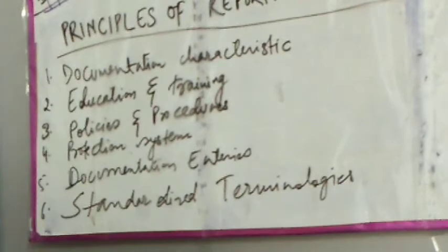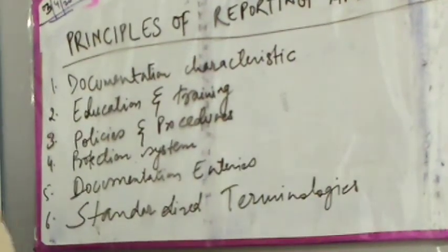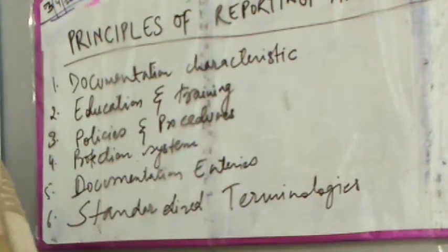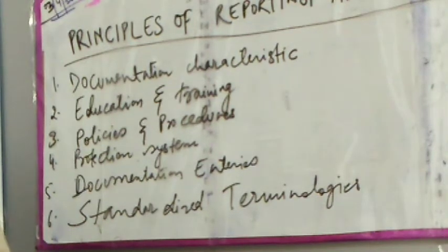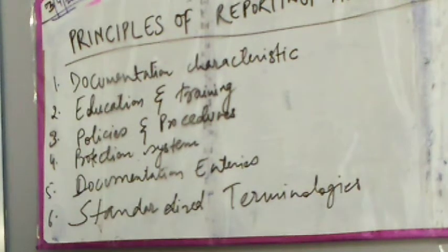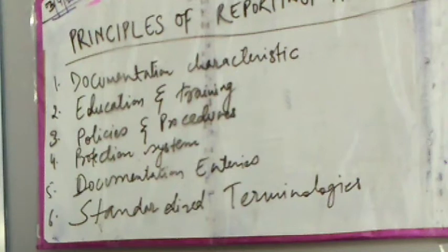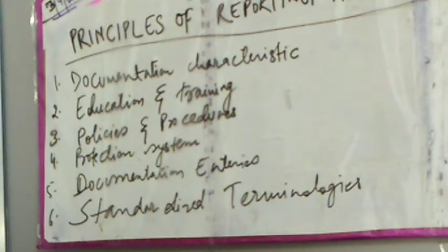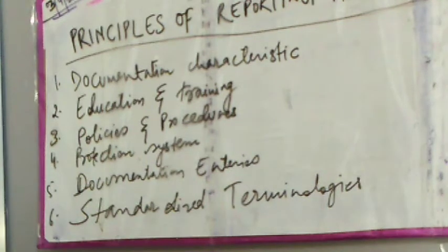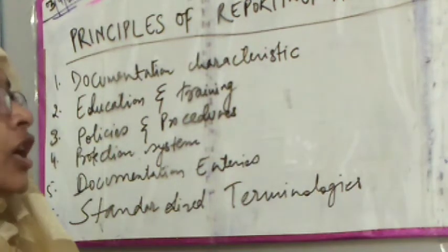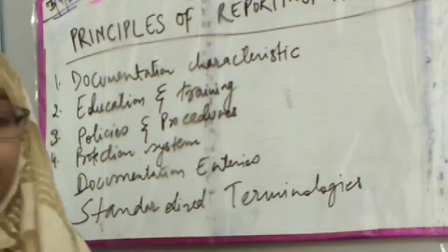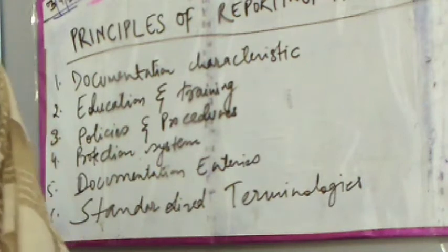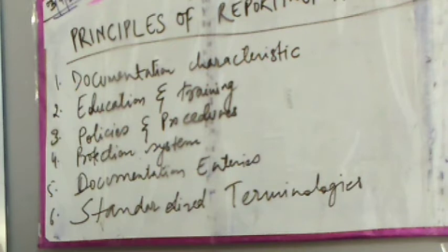Documentation characteristics means that documentation should be accessible, readable, and written in standardized ways. Whether you are doing computer-based documentation or paper-based, you will follow the same principles. Documentation is legal — you will not insert anything without time, date, and provider information.